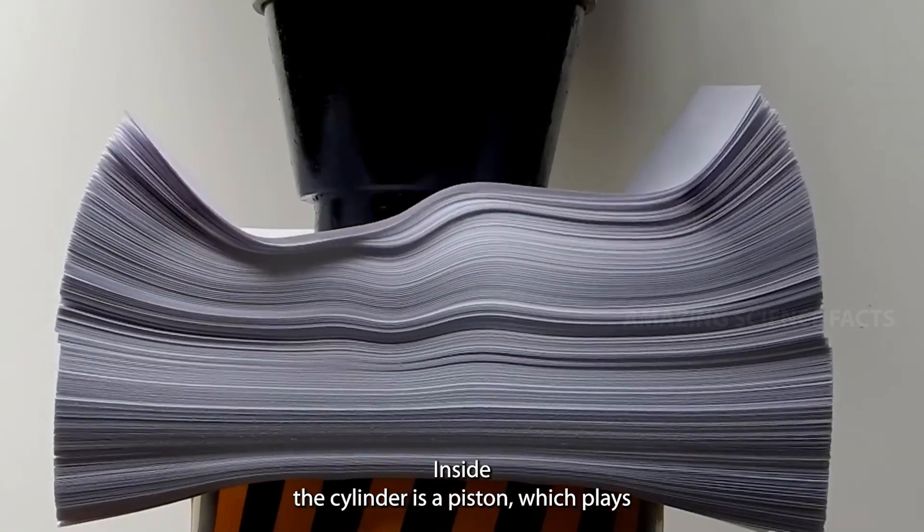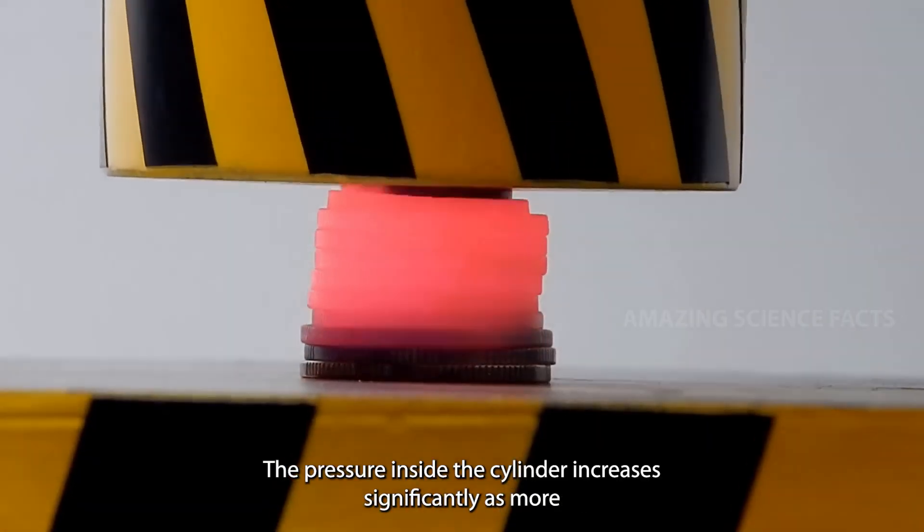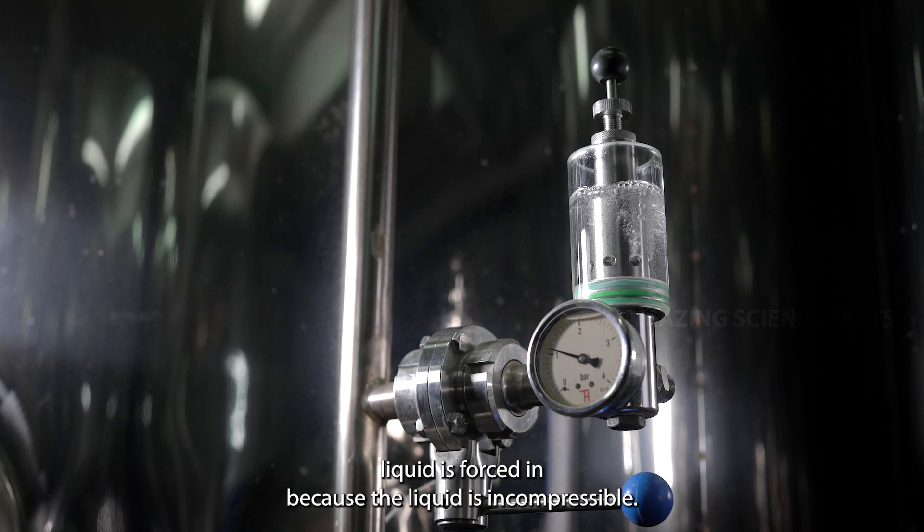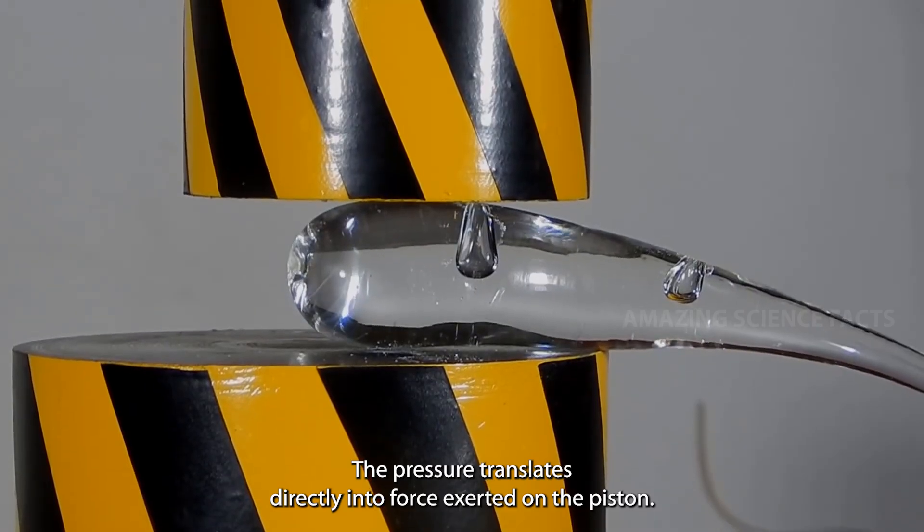Inside the cylinder is a piston, which plays a central role in the press's operation. The pressure inside the cylinder increases significantly as more liquid is forced in. Because the liquid is incompressible, the pressure translates directly into force exerted on the piston.